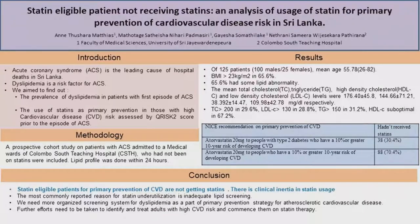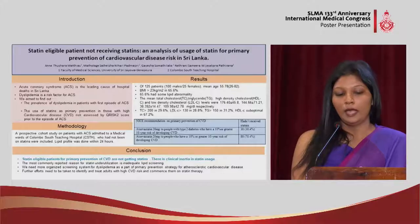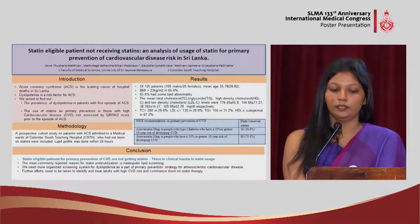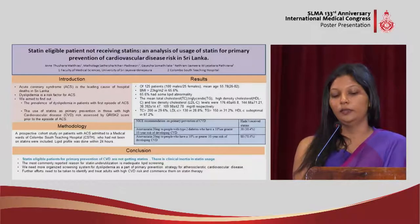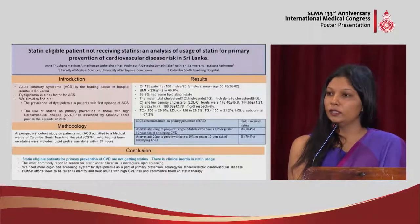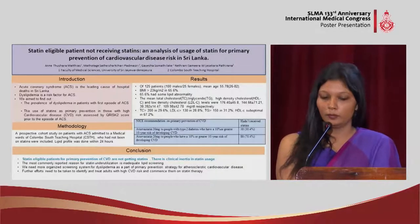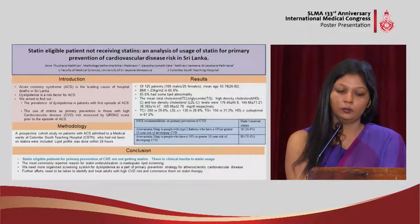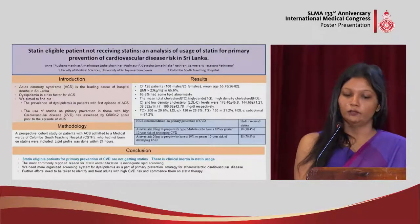Moving on to the salient findings: the mean age of our population was 55.78 years, ranging from 26 to 82 years. 65.6% of our population had some sort of lipid abnormality — some had hypertriglyceridemia, some had isolated low HDL levels — and isolated low HDL was the most common lipid abnormality encountered.